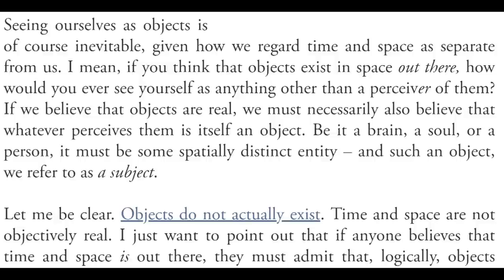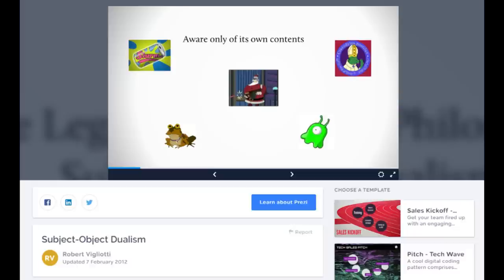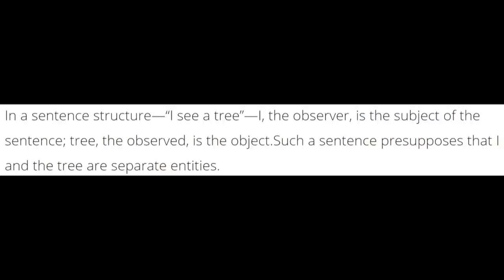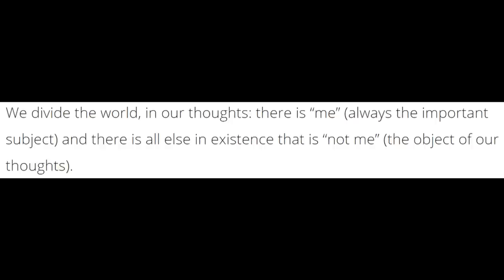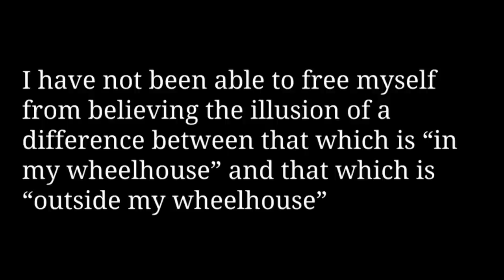Googling 'subject-object duality' landed me on a Quora thread full of people debating whether physical objects are illusory, and a Futurama-themed Prezi slideshow, before I found something written by Robert Wolfe that explained the connection to language. Quote: 'In the sentence structure "I see a tree," I, the observer, is the subject. Tree, the observed, is the object. Such a sentence presupposes that I and the tree are separate entities. We think, in our mind, in sentences, so we habitually separate ourself from every object we see. I, the thinker, am the subject of every thought; the object can be any of the things in existence. We divide the world in our thoughts.' This philosophical stuff is extremely far removed from my wheelhouse — though I'm conditioned to think of it dualistically, of course.